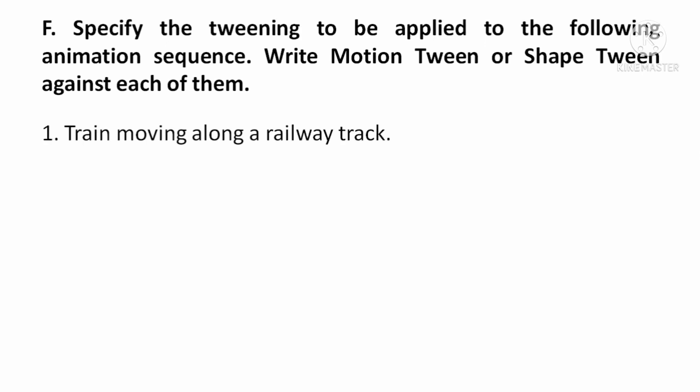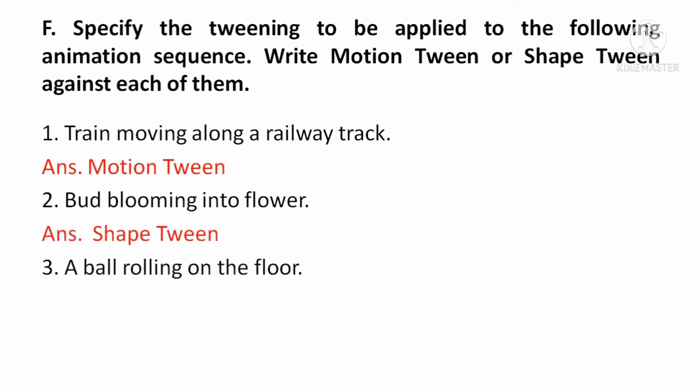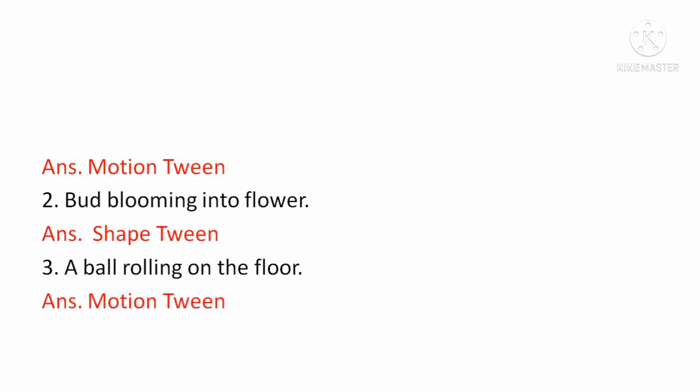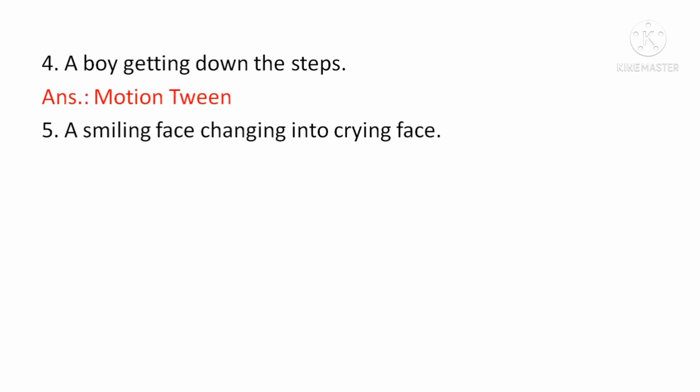Specify the tweening to be applied — motion tween या shape tween. Train moving along railway track — motion tween. Bud blooming into flower, मिन्स एक कली फ्लावर में change हो रही है — shape tween. A ball rolling on the floor — motion tween. A boy getting down the steps, सीड़ियों से नीचे उतर रहा है — motion tween. Smiling face changing into crying face — shape tween.